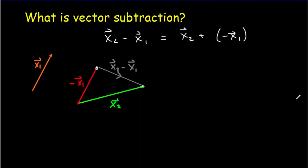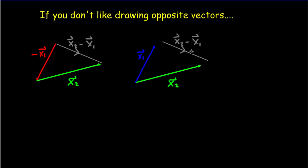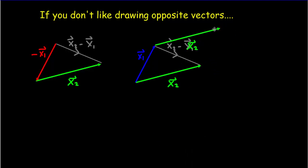If you're good at adding vectors, you're equally good at subtracting vectors, because it's really the same thing. Now most math and physics types are a little bit lazy, and drawing opposite vectors is a little difficult. So there's an easier way: you take your two vectors x1 and x2, join them together tail to tail — like you did in the parallelogram method. The vector x2 minus x1 will go from the head of x1 to the head of x2. If you complete your parallelogram, one diagonal will be x2 minus x1 and the other diagonal is x1 plus x2 — two birds with one stone.